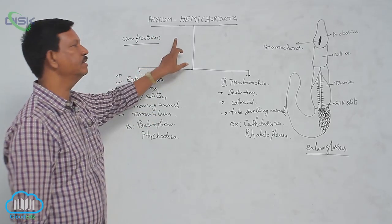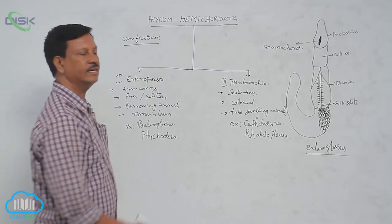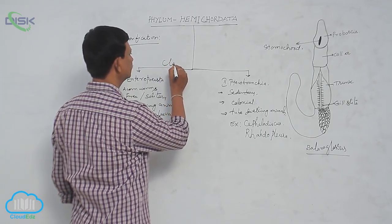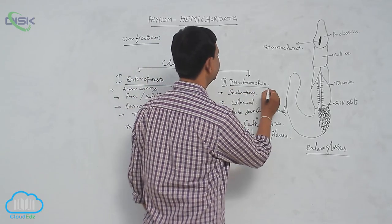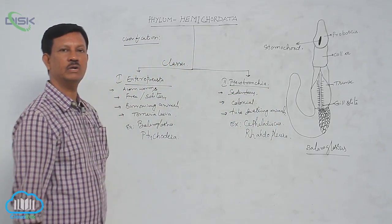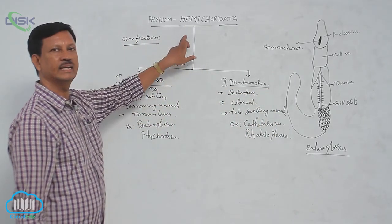This is the classification of Hemichordata. Hemichordata is divided into two classes: Enteropneusta and Pterobranchia. These are the two classes included in the phylum Hemichordata.